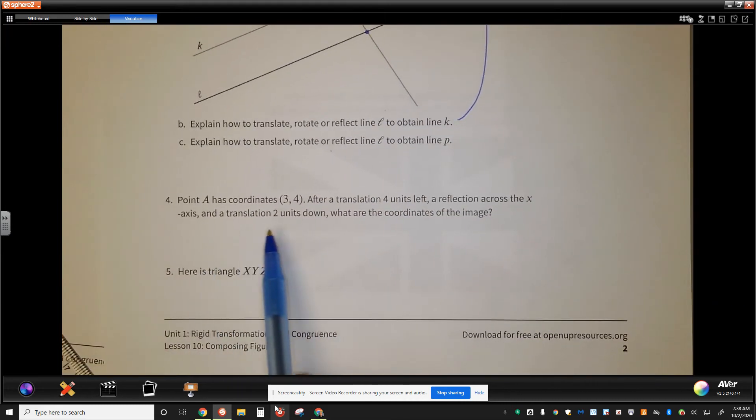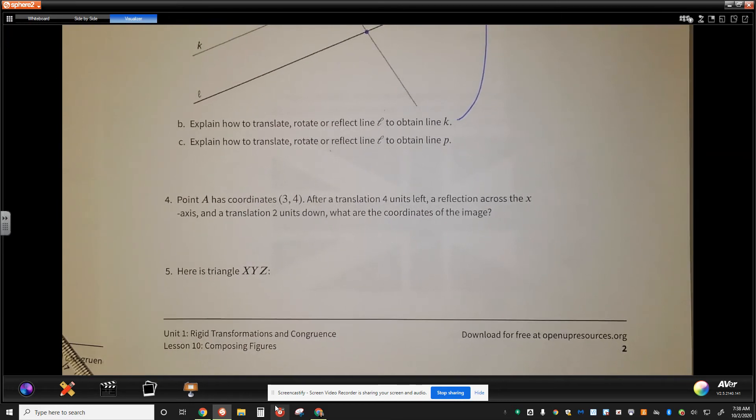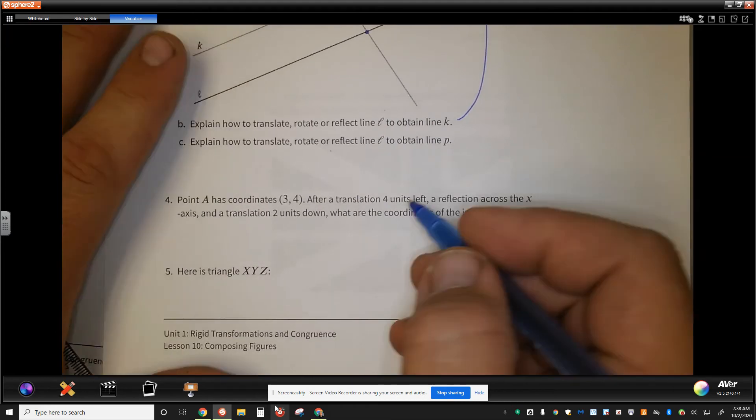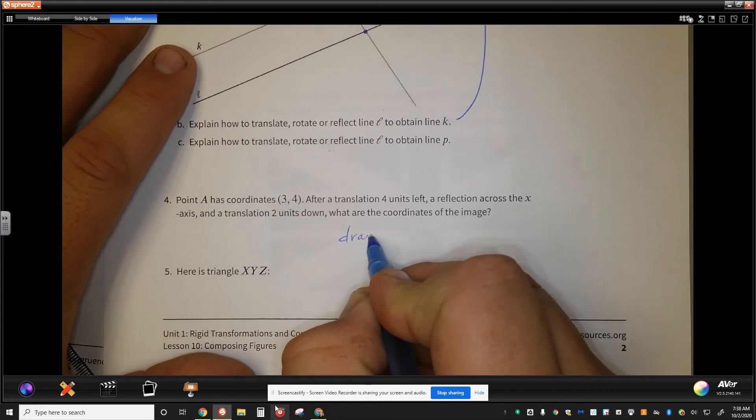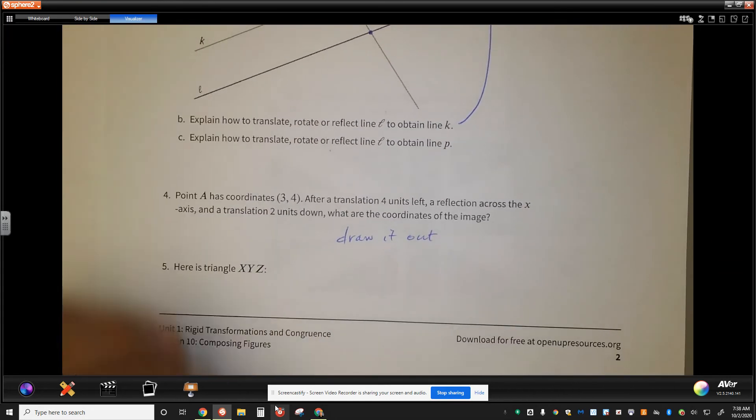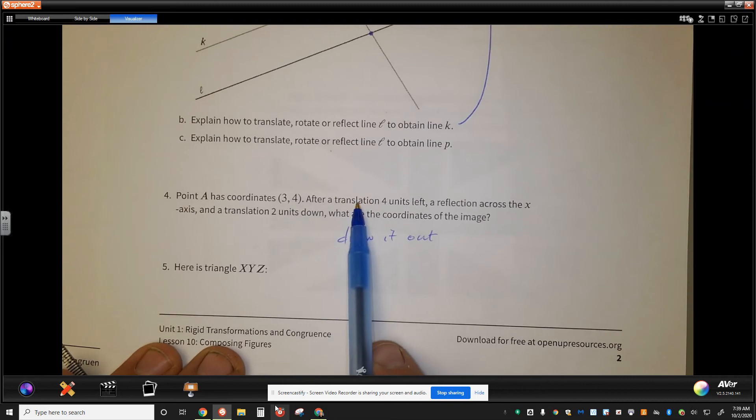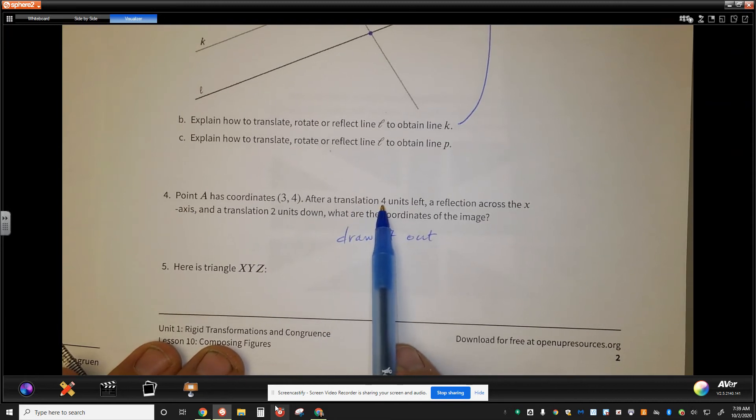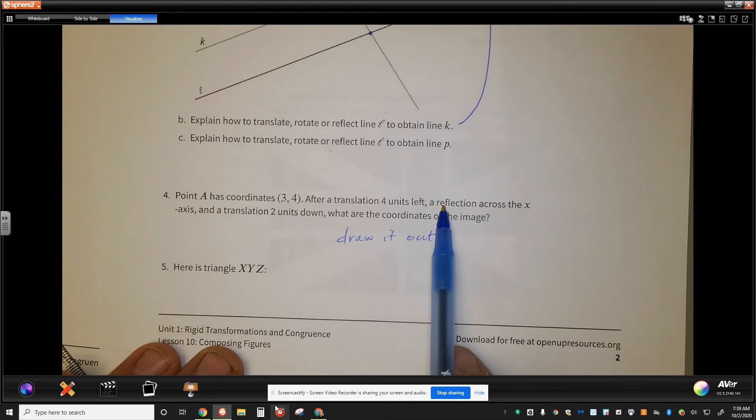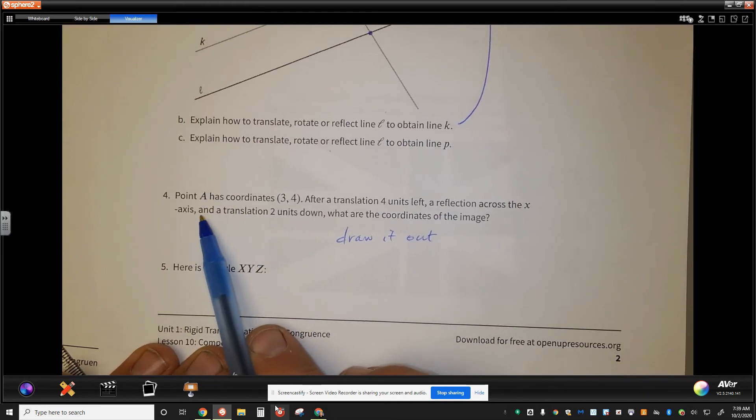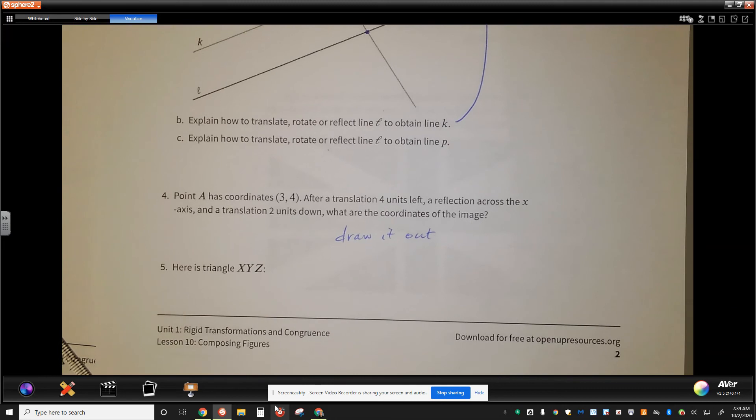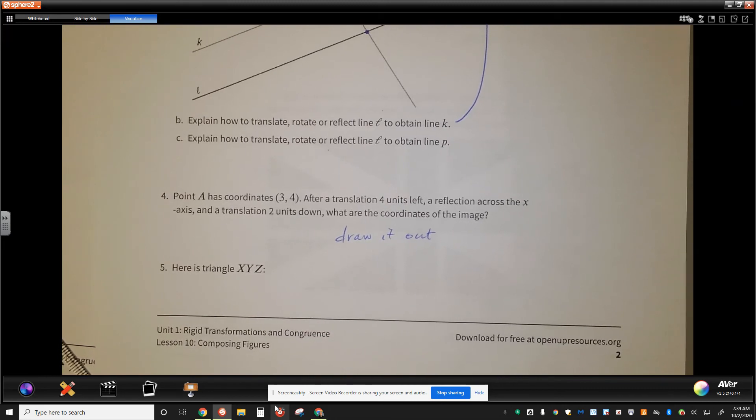For number four, a certain point A has a coordinate of (3, 4). After translation of 4 units left, a reflection across the x-axis, and a translation of 2 units down, what are the coordinates of the image? I'm going to tell you right here to draw it out and see what you can come up with. Or, if you come up with it algebraically, and you can tell me the process of how to use this with coordinates, translating units left, which one of these coordinates translates left, and then how does the reflection across the axis happen, and then what happens when we translate 2 units down. Keep that in mind and see what you can come up with.